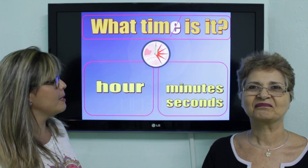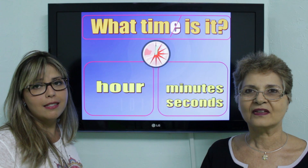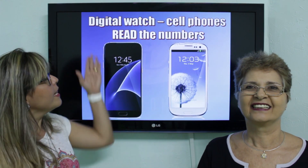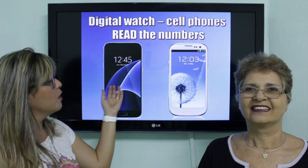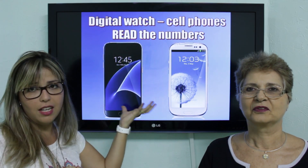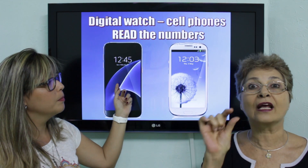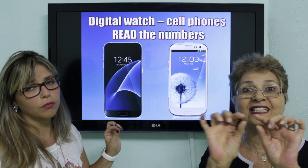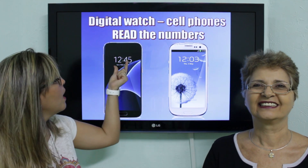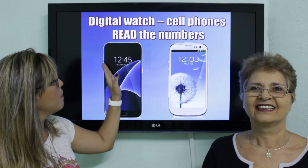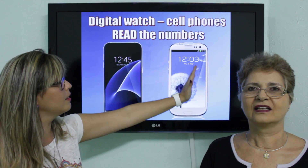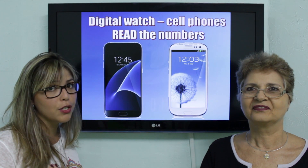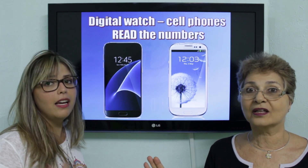So everybody, what time is it? In the digital watch — vamos imaginar que aqui a gente tem os celulares da gente, os relógios digitais. Eles mostram só um número, você lê. Imagina que são os celulares da gente: a gente vai ter 12:45 e 12:03. A gente lê normal. Então vale a pena estudar os números em inglês até o 60. Em português eu digo 12 e 45 — em inglês não tem um 'e', você só lê o que está escrito.